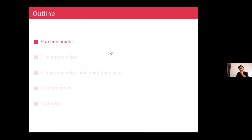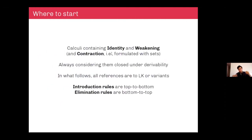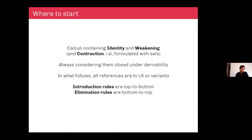The starting point of this investigation: my question is, what are all the sequent calculi where cut is merely admissible that we can think about? The candidates I'm going to consider are calculi with identity or reflexivity, weakening, and contraction — unrestricted identity, unrestricted weakening both left and right, multiple conclusions, contraction all over the place. So it's going to be sets. In what follows I'll be mostly referring to Gentzen's LK, or a notational variant thereof.